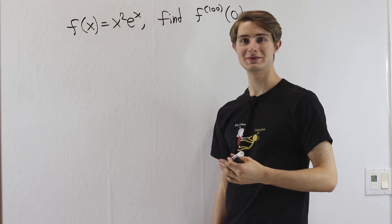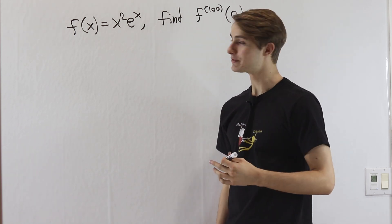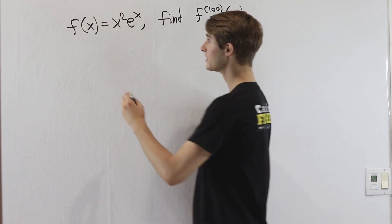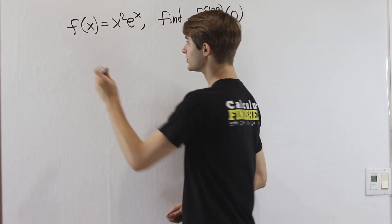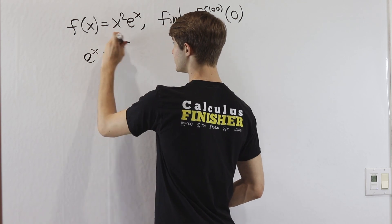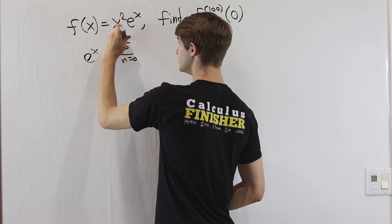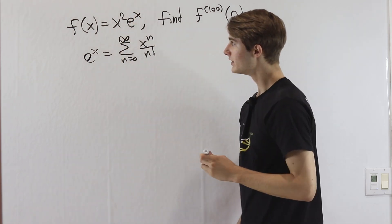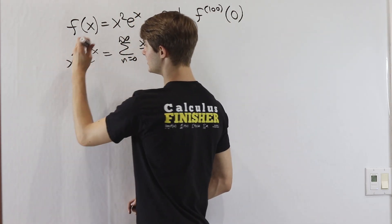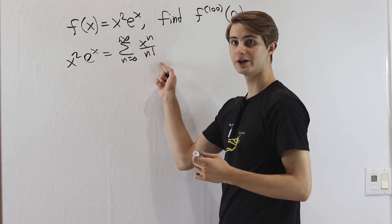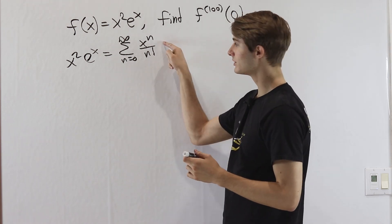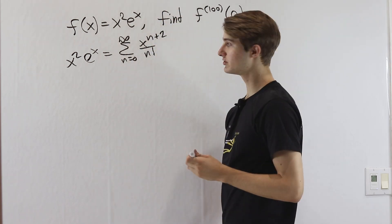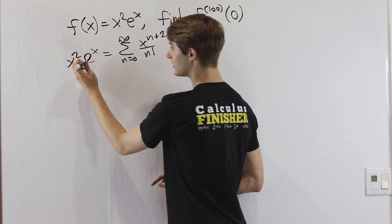That clever approach is going to come from the idea of Taylor series. Let's start out by looking at the Taylor series expansion of this function. We know that e to the x equals the sum from n equals zero to infinity of x to the n over n factorial. If we want x squared times e to the x, we can just multiply by x squared, changing x to the n into x to the n plus 2, which takes into account our x squared.